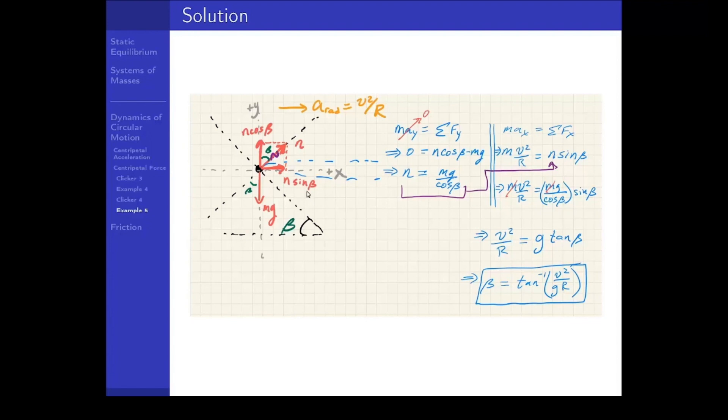Next, we apply the law, the second law. In the y direction, there is no acceleration. So we have n cosine beta minus mg equals zero. And then we see that the normal force is mg over cosine beta.